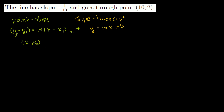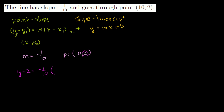Let's do a few in point-slope form to make things concrete. We have a line with a slope of negative 1 over 10, so m equals negative 1 over 10, and it goes through the point (10, 2). We can directly go to point-slope form: y minus 2 is equal to negative 1 over 10 times x minus 10. Just like that, we're done — we've put it in point-slope form.